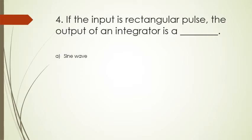Question 4: if the input is a rectangular pulse, the output of an integrator is: sine wave, square wave, ramp, or rectangular pulse. When you give a rectangular pulse as input, at the output you will get a ramp. Note that this is a non-linear application of the op-amp.